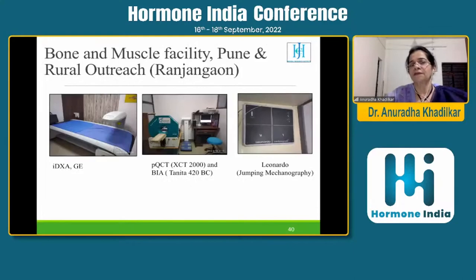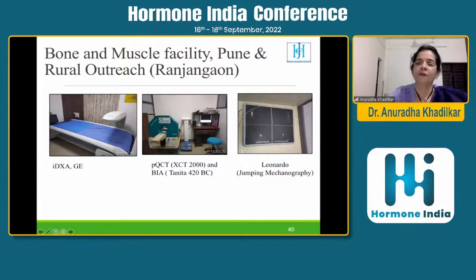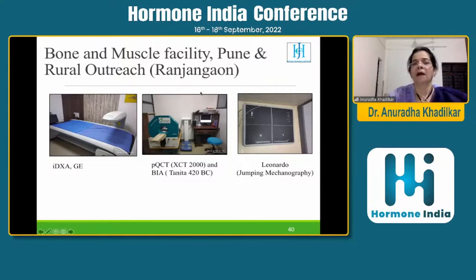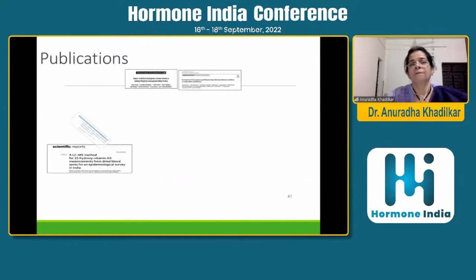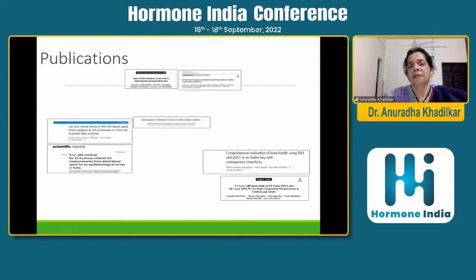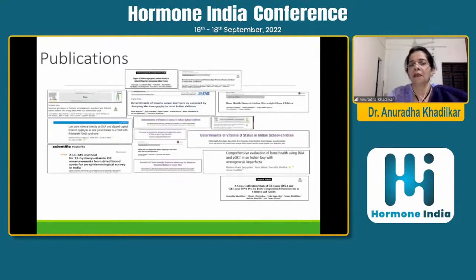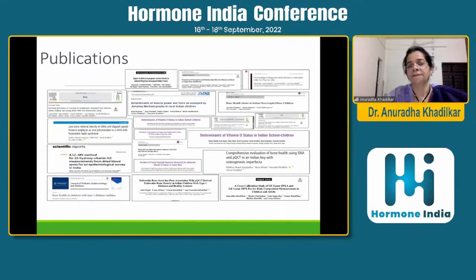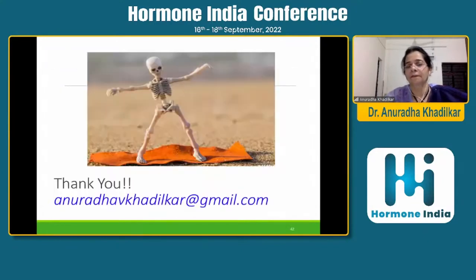This is our bone and muscle facility at Pune — our GE Lunar iDEXA, our pQCT, and a machine called a jumping mechanography which we use to measure objective muscle function. We have a similar setup at our rural center in Vadu, where we are doing rural health studies. These are some of our publications in the area of bone in the last few years. Thank you.